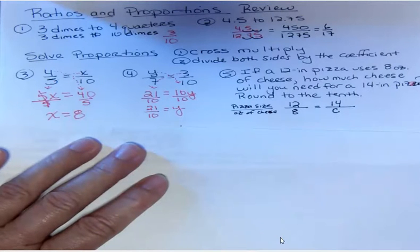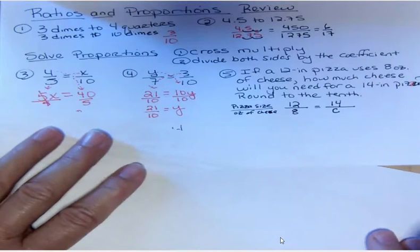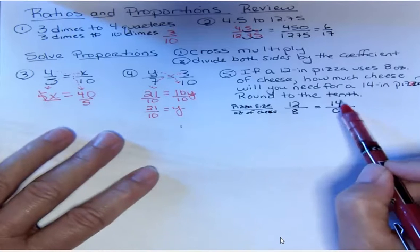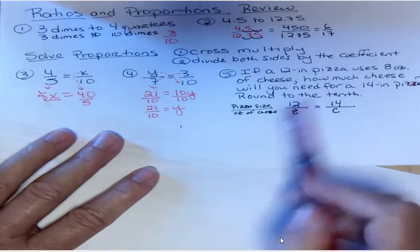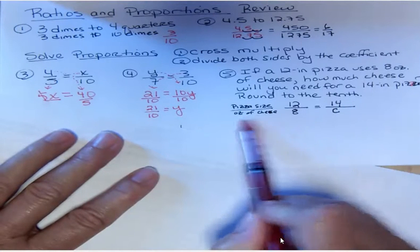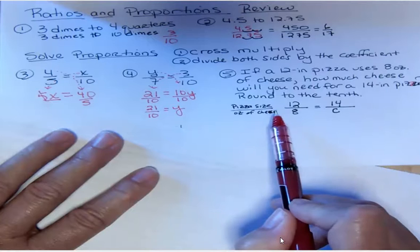So a common mistake for people is to write the wrong thing, like they put 14 on the bottom instead of the top. You won't make that mistake if you take the time to do what I just did and write that.